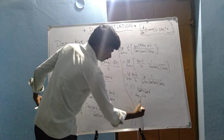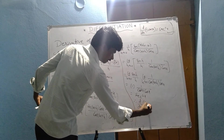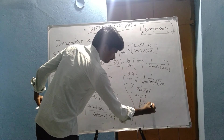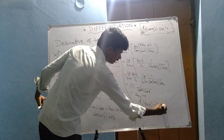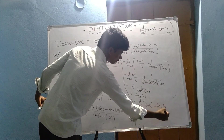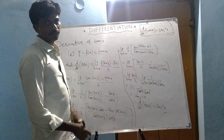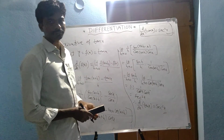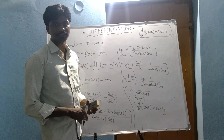Therefore, d/dx of tan x equals secant squared x. Do you have any doubt? Please comment, please subscribe my channel, like and share. Thank you everyone.